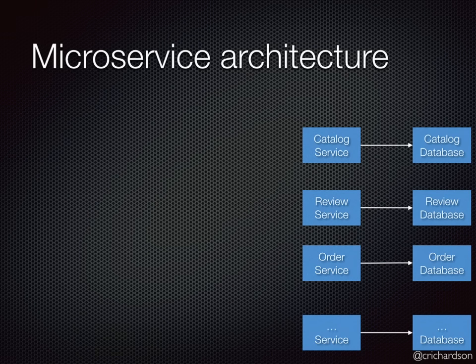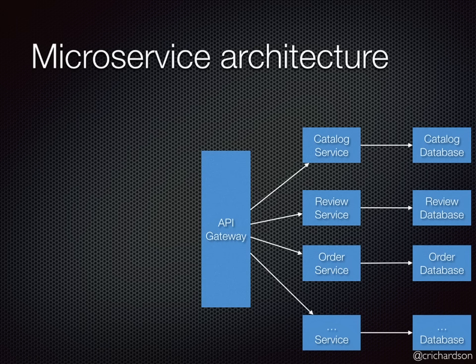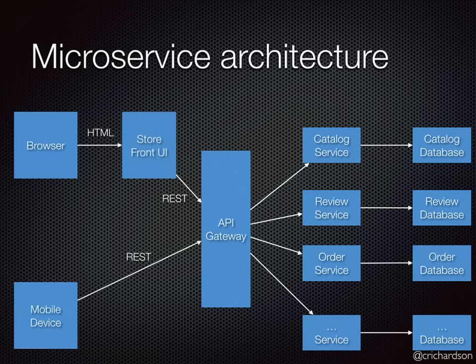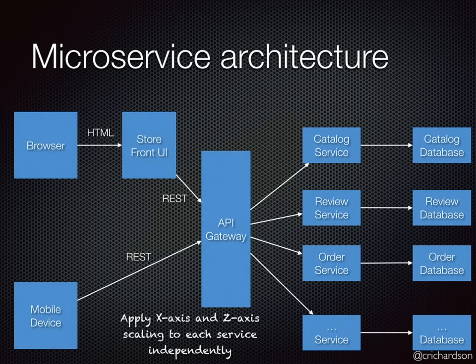Each service has its own database, which is absolutely necessary to ensure loose coupling — but that's also a double-edged sword and is the root cause of many of the problems motivating this presentation. Sitting in front of the services you'll have an API gateway acting as a facade, providing a single entry point and possibly a dedicated API to each kind of client. Each of these services can be scaled independently. Services enforce modularity because they have a very well-defined boundary — a service is ultimately a process, and everything inside it is private unless explicitly exposed through an API.